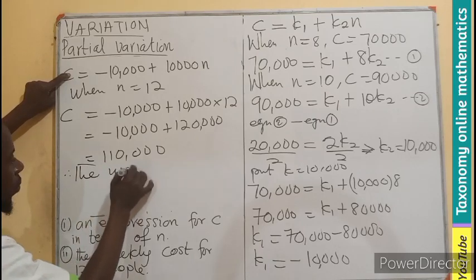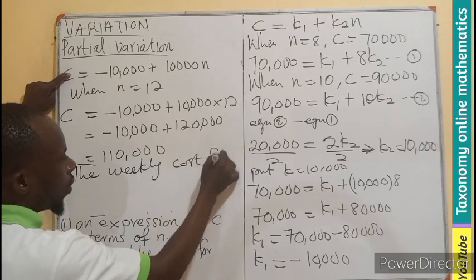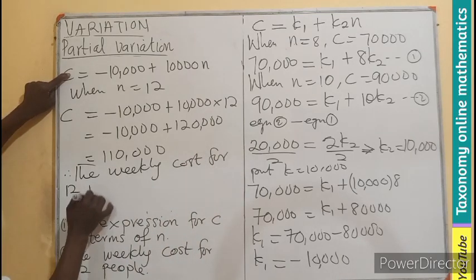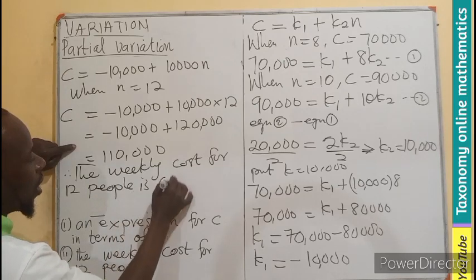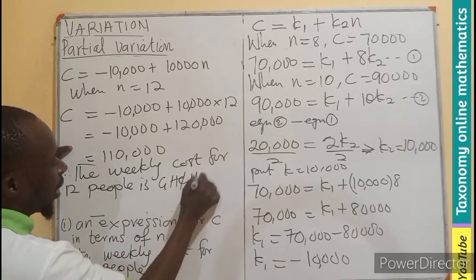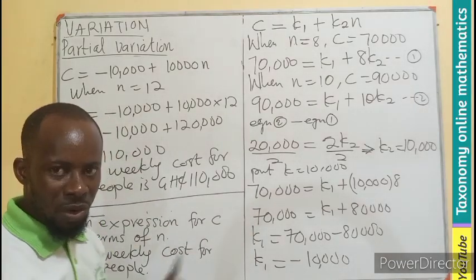Therefore, the weekly cost for 12 people is going to be 110,000 Ghana cedis.